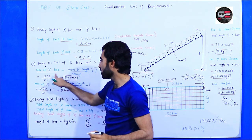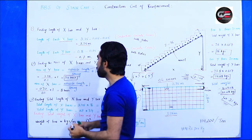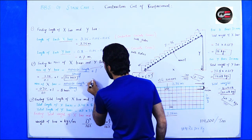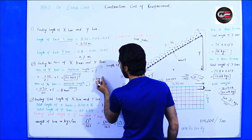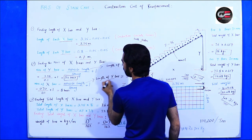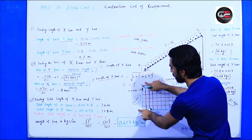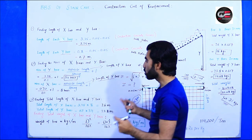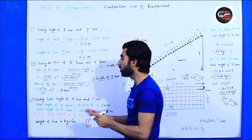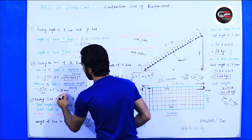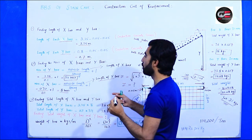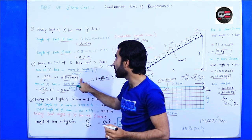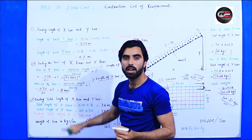For the number of x-bars, the opposite length is the length of the y-bar, which is 0.7 meter. So: 0.7 ÷ 0.1 + 1 = 7 + 1 = 8 x-bars required. Summary: we need 34 y-bars and 8 x-bars.